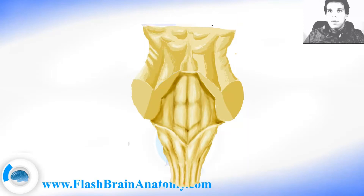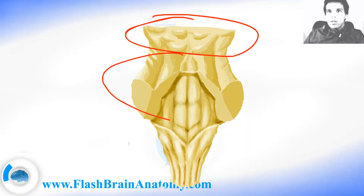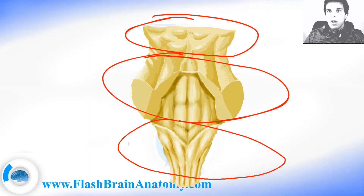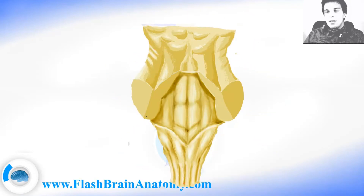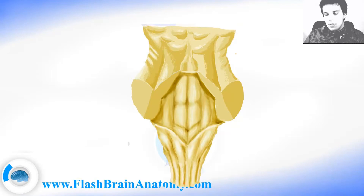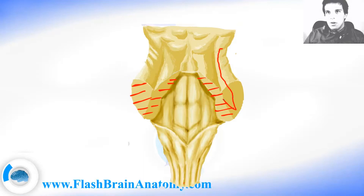So there you have the mesencephalon, the pons, and the medulla oblongata — the three parts that make up the brainstem. The cerebellum does not belong to the brainstem. The cerebellar peduncles are bundles of nerve fibers; the cerebellum is simply attached on these fibers. We made a cut here and removed the cerebellum, and I will illustrate that at the end of the video.